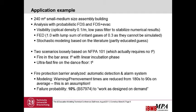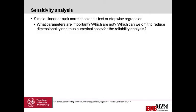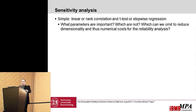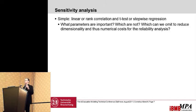The failure probability of the automatic detection and alarm system not working as designed on demand is 10%, as given in British Standard 7974. For the sensitivity analysis, I kept it as simple as possible using linear and rank correlation analysis, then T-tests or stepwise regression. This gives answers to which parameters are important, which are not, and which can be omitted — because reducing the dimensionality of a reliability problem definitely reduces the computational time needed.